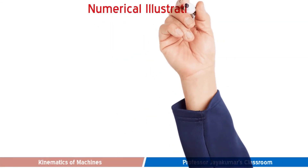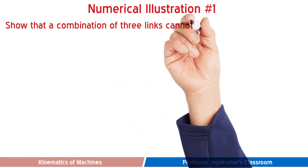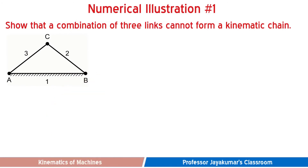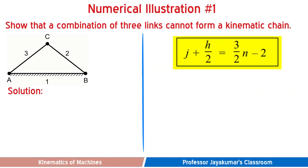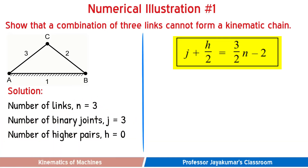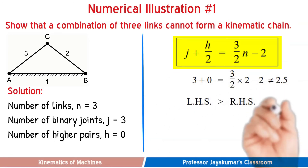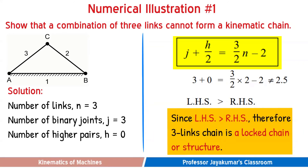Now we shall illustrate the concepts with numerical problems. Problem number one: let us show that a combination of three links cannot form a kinematic chain. The equation that needs to be satisfied is j + h/2 = (3/2)n − 2. We have three binary joints a, b, and c, so j = 3. The pairs are all turning pairs — lower pairs — so higher pair h = 0. And n = 3. Substituting, we get left-hand side = 3 and right-hand side = 2.5. Since the left-hand side is greater than the right-hand side, the three-link chain is not a kinematic chain — in fact, it is a locked chain or structure.